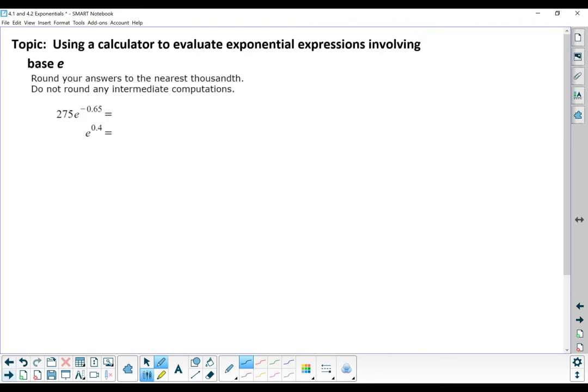We just have two topics left. The first one is called Using a Calculator to Evaluate Exponential Expressions Involving Base E. Essentially, we are just making sure you know where that E button is, because we are going to be using it in a second. You can type this expression into your calculator, making sure to be careful about any negatives and the decimal in the correct spot. For this first one, it's 143.563, round to the nearest thousandth. And E to the 0.4 power is 1.492, if we round to the nearest thousandth.